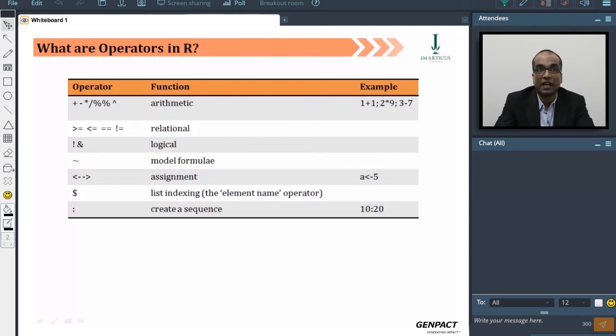The logical operators would be NOT, AND, and OR. You can also use a double ampersand, which has some difference in the way it works. We'll get to see that when we actually work on these.